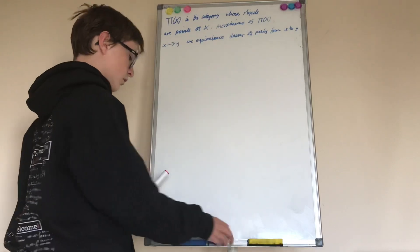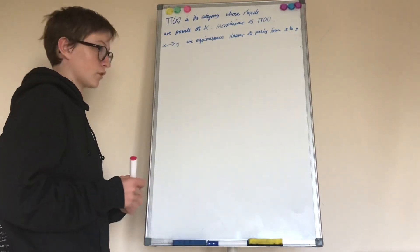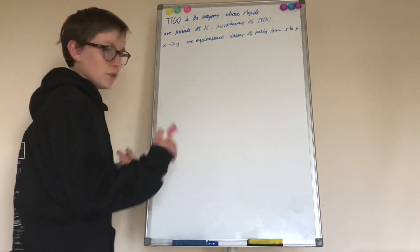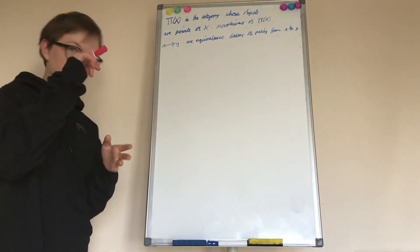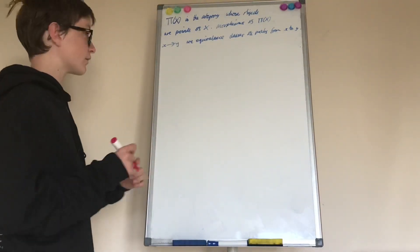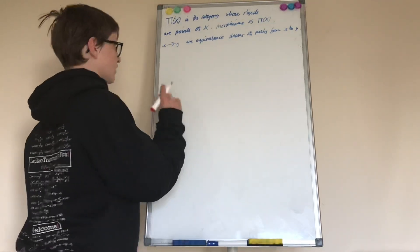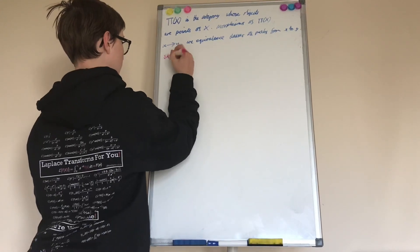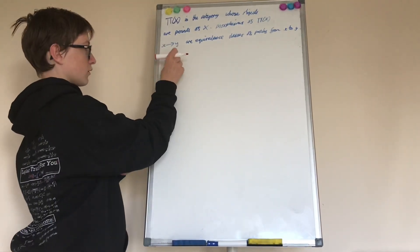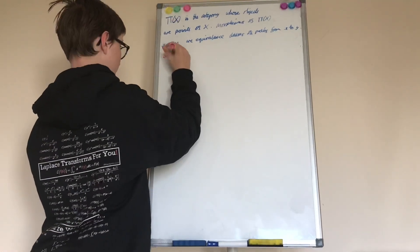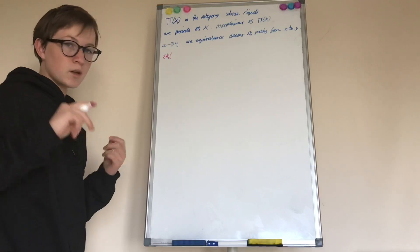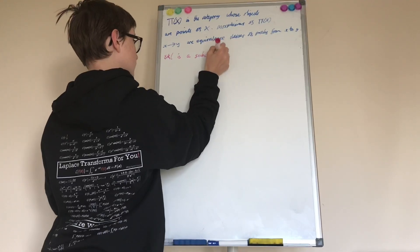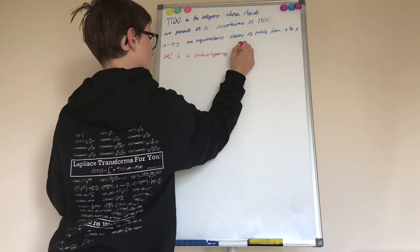Another useful notation is the skeleton of a category. I'm not going to write cursively like you fancy category theorists — I'm just going to write L, not some fancy L which I could never draw. So we denote the skeleton of a category L as SK of L. I'll write the L so it doesn't look like a bracket. It is a subcategory of L.